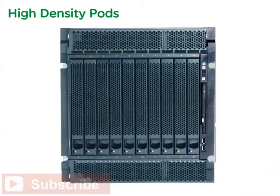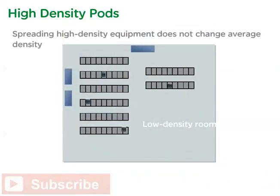Although today's IT equipment operates at high power density—that is, each individual server draws a high amount of power—this does not always mean such devices must be deployed in a high-density manner by packing them together in a rack. In fact, a popular strategy has been to spread out high-density servers by installing fewer in each rack. If the equipment is dispersed like this, the data center's average power density will likely stay in the range that the data center was originally designed for, and a variety of technical problems can be avoided.